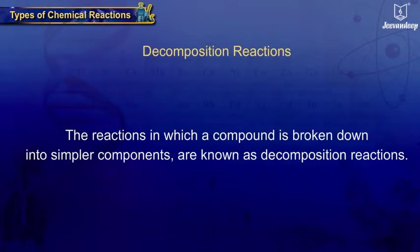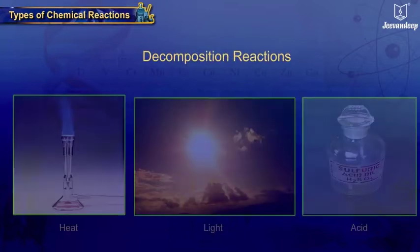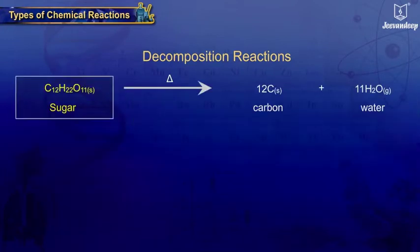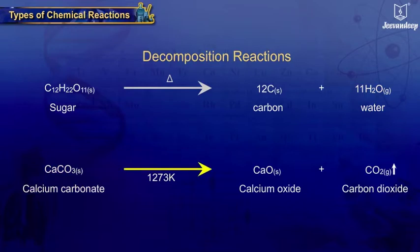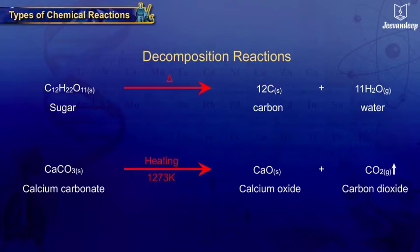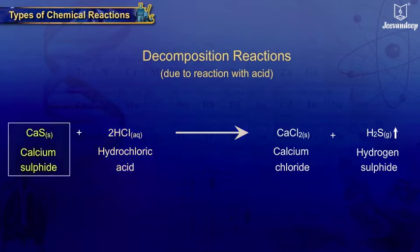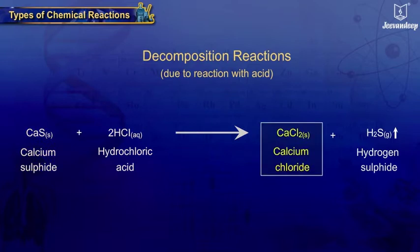Decomposition Reactions: Reactions in which a compound is broken down into simpler components are known as decomposition reactions. Decomposition can be brought about by heat, light, or acids. A sugar molecule decomposes to carbon and water on heating. Calcium carbonate decomposes to calcium oxide and carbon dioxide on heating at 1273 Kelvin. Since these decomposition reactions are carried out by heating, they are also known as thermal decomposition reactions. Hydrochloric acid decomposes calcium sulfide into calcium chloride and hydrogen sulfide.